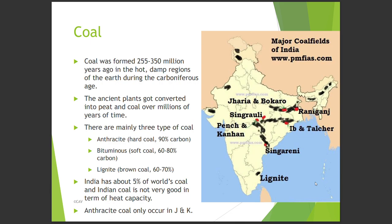The first non-renewable resource we study is coal. Coal was formed 255 to 350 million years ago in the hot, damp regions of the Earth during the Carboniferous Age. Ancient plants were converted into peat and coal over millions of years. There are mainly three types: Anthracite (hard coal, 90% carbon), Bituminous (soft coal, 60–80% carbon), and Lignite (brown coal, 60–70% carbon). India has about 5% of the world's coal, but Indian coal is not very good in terms of heat capacity. Anthracite coal occurs only in Jammu and Kashmir, with Kalakot mining there.